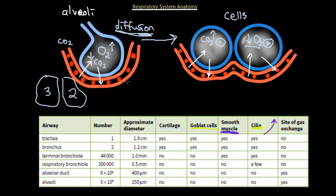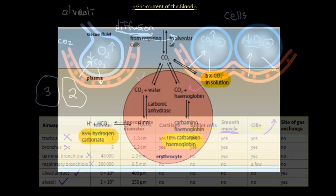The site of gas exchange — oxygen and carbon dioxide exchange — only occurs in the alveoli and alveolar duct, primarily in the alveoli. There is no gas exchange in any of the bronchioles, bronchus, or trachea. Goblet cells and smooth muscle and cilia are present all the way down to the terminal bronchioles but not the respiratory bronchioles. Cartilage is only found in the trachea and bronchus.